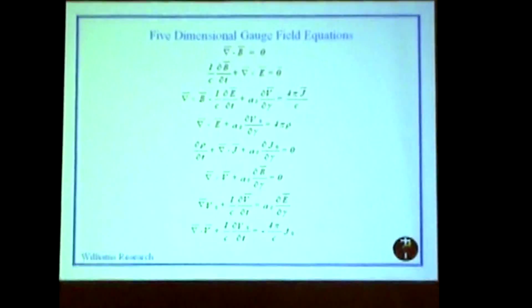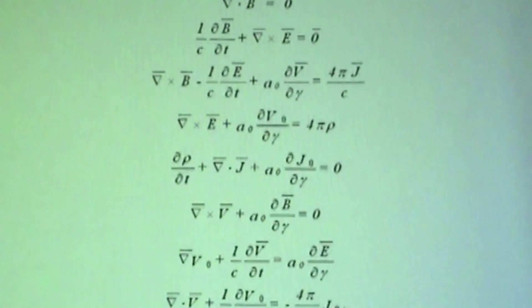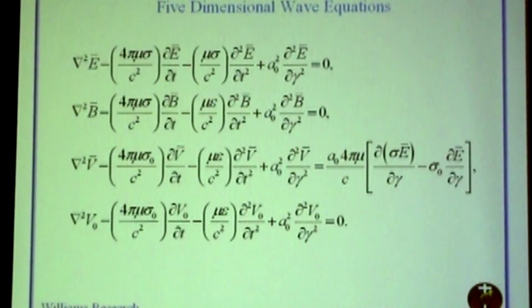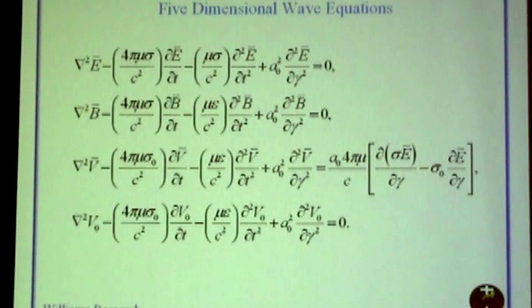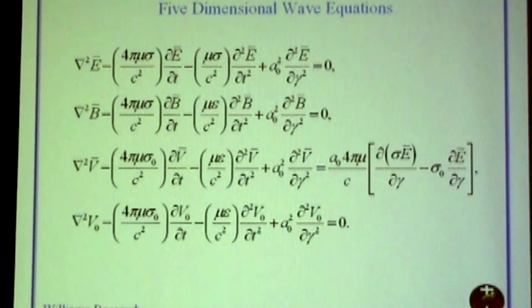When you go to five dimensions and derive the field equations, you find that instead of having the four Maxwell's equations, you end up with eight. We've seen a couple of presentations of gravitational wave equations — we can do that too. Just as with the electromagnetic wave, you can't have one without the other. We find that the gravitational vector field and the gravitational scalar field are wrapped together with the electromagnetic components.